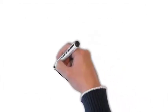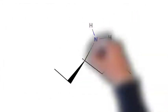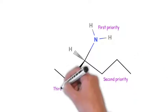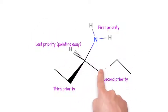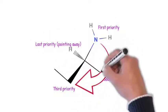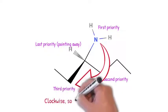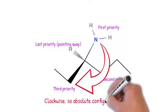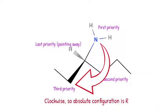Alright, we're almost done here. Now that we've rotated the molecule as needed, draw an arrow connecting all substituents in decreasing order of priority. If the arrow runs clockwise, the absolute configuration of the stereocenter is R. If the arrow runs counterclockwise, the configuration is S.